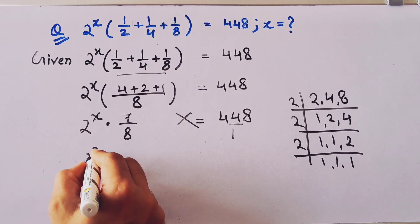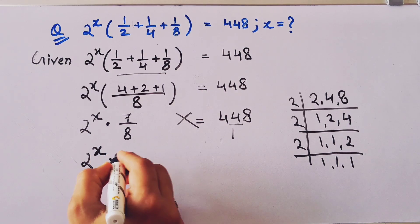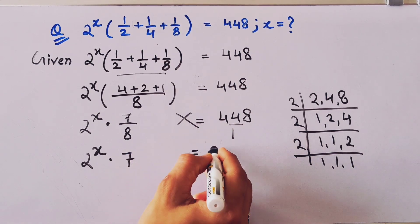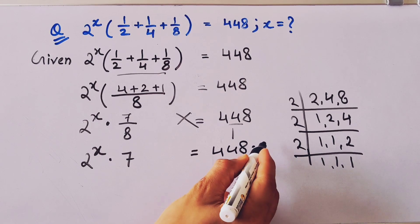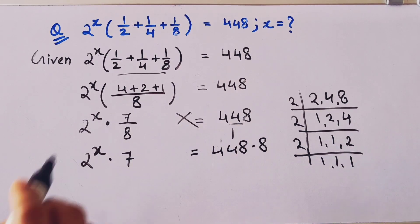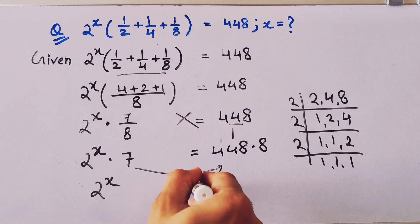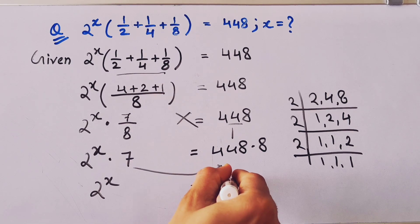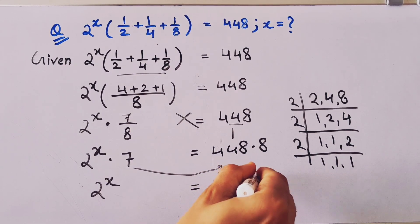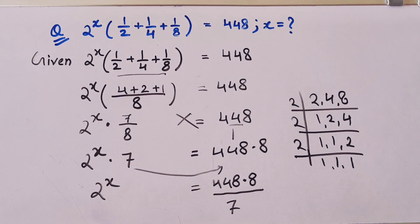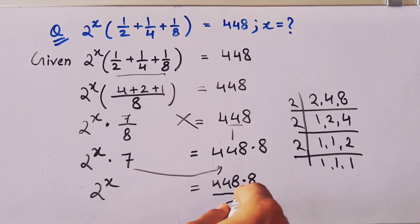Now cross multiplication, so 2 to the power x times 7 equal to 448 times 8. Now this will put this side, so 2 to the power x equal to 448 times 8 divided by 7.